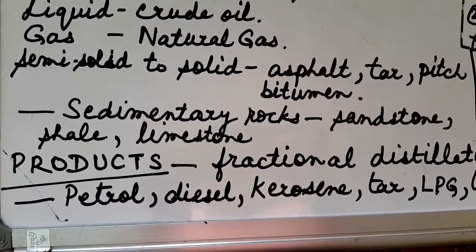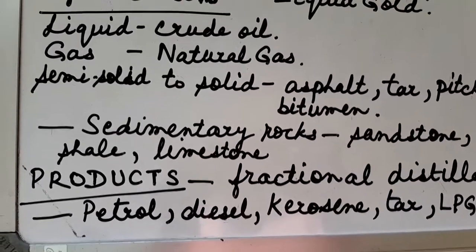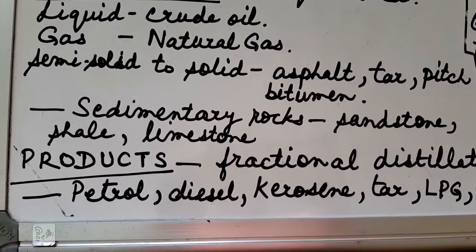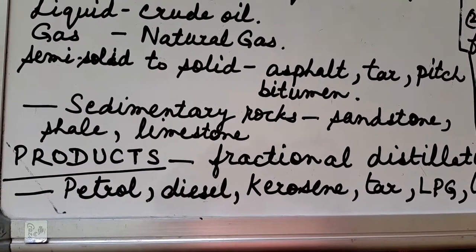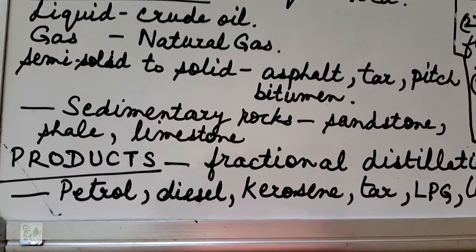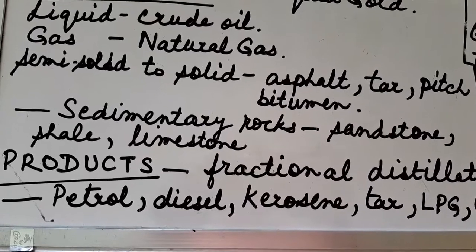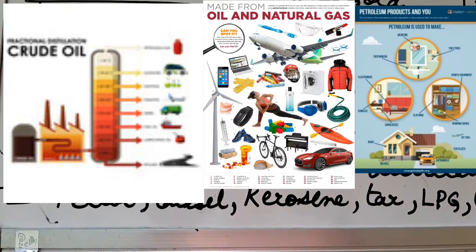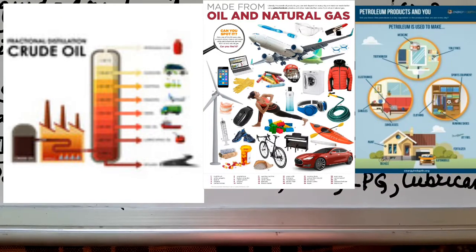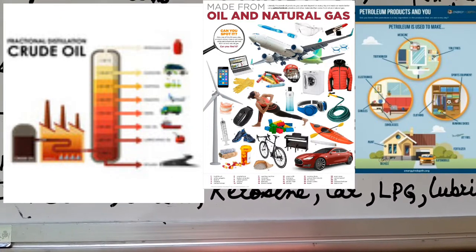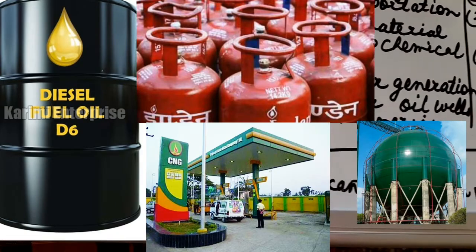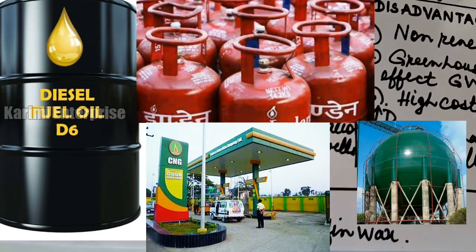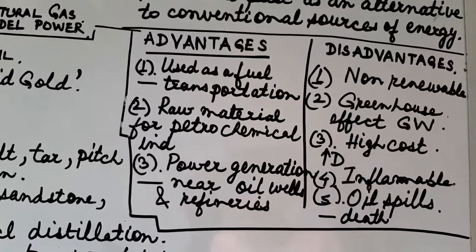Petroleum is found in sedimentary rocks — in sandstone, shale, and limestone — and generally in the continental shelf, which is a shallow sea floor next to the coast. The products obtained after refining petroleum through a process called fractional distillation are petrol, diesel, kerosene, tar, LPG, lubricants, and paraffin wax.